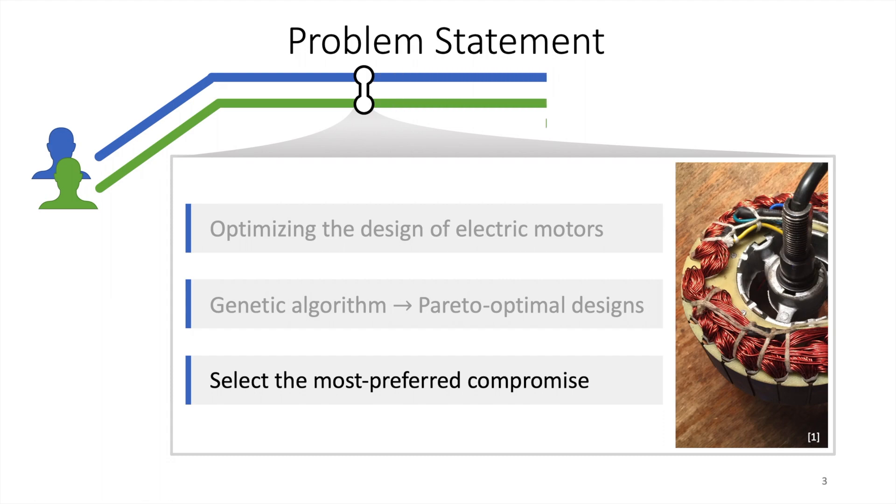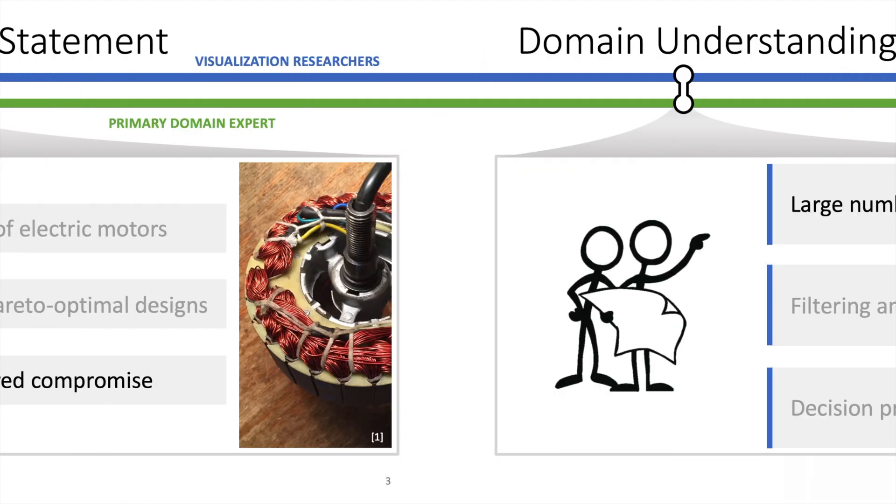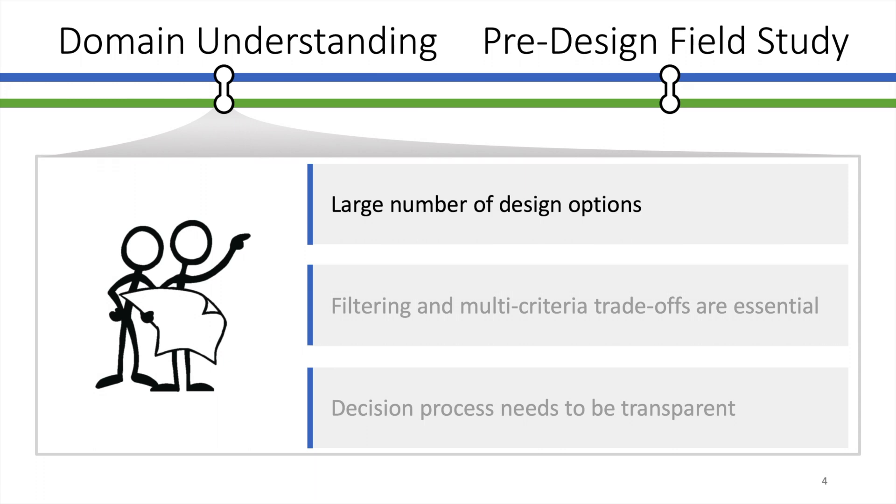We spent a few conversations on understanding the particular characteristics of motor design. Starting from a customer specification, simulation is used to try out thousands of slightly varied design options. Motor design is characterized by a large number of alternatives, even when focusing only on those that are Pareto optimal.